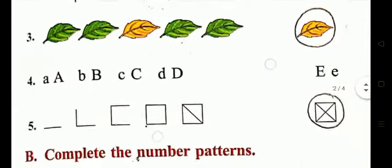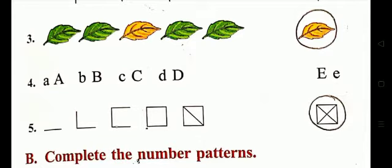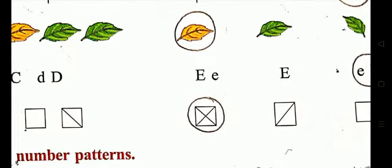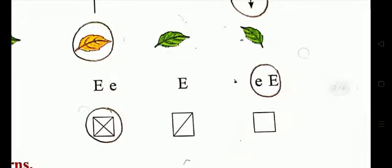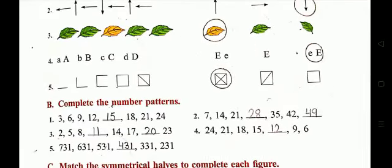Fourth, you can see alphabets: small a, capital A, small b, capital B, small c, capital C, small d, capital D. Next will come letter E — after D, alphabet E is coming. So what will come? First they take small alphabet then capital, so next will be small e then capital E.